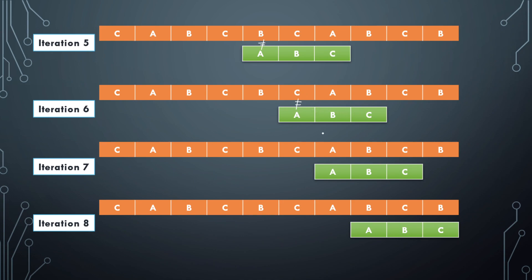In iteration seven, moving the pattern by one position, a lies on top of a — they are equal. Checking the next: b and b are equal. Checking the third character: c and c are also equal. Since all characters match, we've found a match and print this index. We then slide the pattern one more place and see a and b are on top of each other — not equal. This is the end of the process since we've reached the end of the text string.